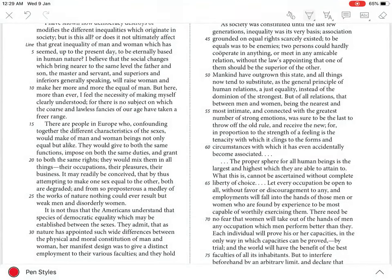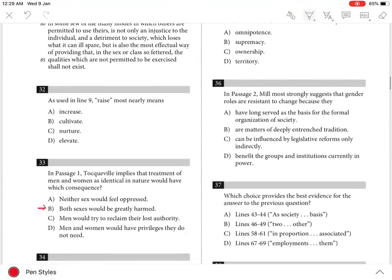This sentiment is best expressed by the author in lines 22-24 when he states, it may readily be conceived that by thus attempting to make one sex equal to the other, both are degraded. Something that choice B echoes.